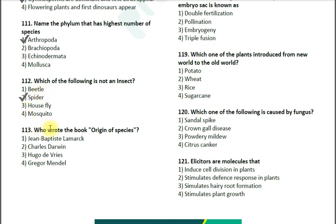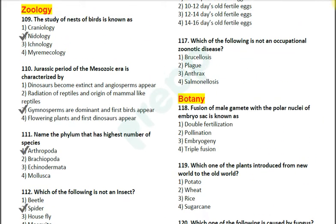Question number 113: Who wrote the book 'Origin of Species'? Option 1: Jean-Baptiste Lamarck; option 2: Charles Darwin; option 3: Hugo de Vries; option 4: Gregor Mendel. The correct answer is Charles Darwin, who also gave the theory of natural selection.